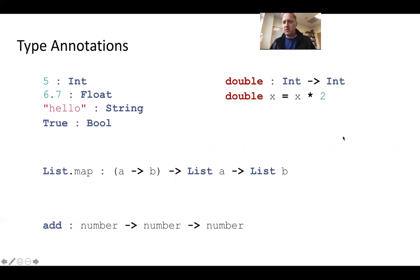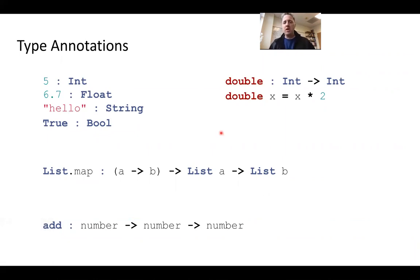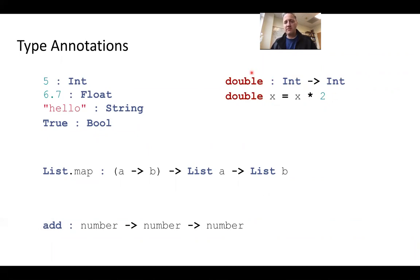So you have functions. We can annotate functions with the type signature of the function. Remember, everything to the left of the last arrow are the inputs and everything to the right of the last arrow is the output. So double is a function that accepts as input an int and returns as output also an int. And that's the function called double.